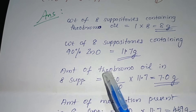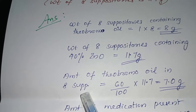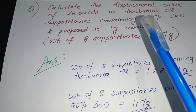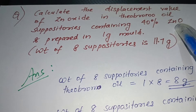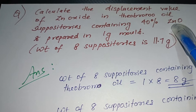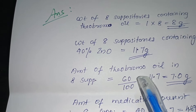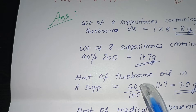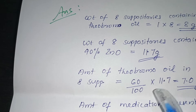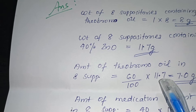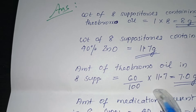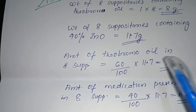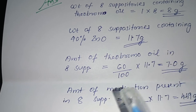Next, we will find the amount of base, theobroma oil, in 8 suppositories. Since 40% is zinc oxide medicament, the rest, 60%, is the base. So 60% of 11.7 gram equals 60/100 × 11.7 gram, which gives 7 gram as the amount of theobroma oil.